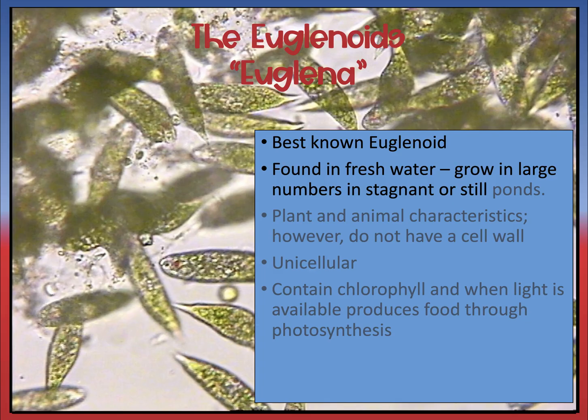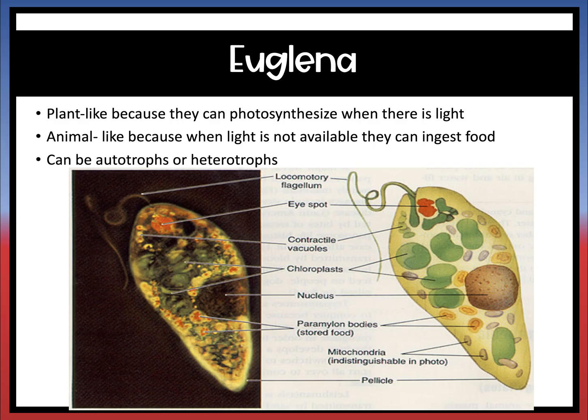The last thing we're going to talk about with protists are the euglenoids, whose representative organism is euglena. They are found in fresh water. The cool thing about them is that they have both plant and animal characteristics, but they don't have a cell wall. They are unicellular and do have chlorophyll, which is why they are green. When light is present, they produce food through photosynthesis. When light isn't present, they use animal-like characteristics and consume other organisms for nutrition.